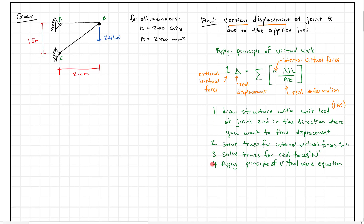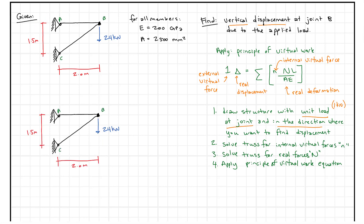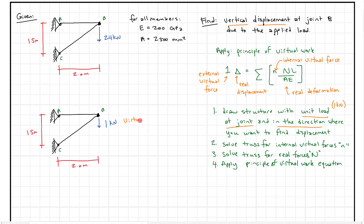We're going to follow steps one through four. Step one: draw the structure with the unit load at the joint and in the direction where you want to find the displacement. So I'm going to copy the structure down, delete the existing loads, and put a one kilonewton virtual load at joint B in the vertical direction — downward — since we want vertical displacement.